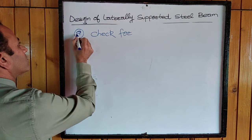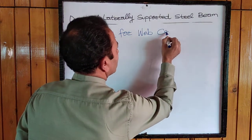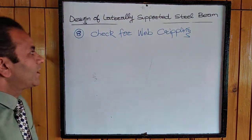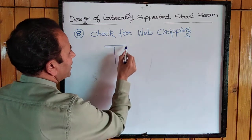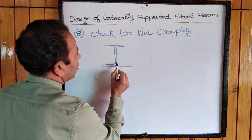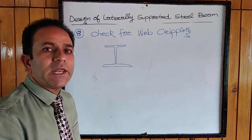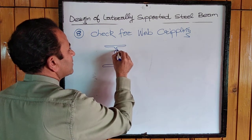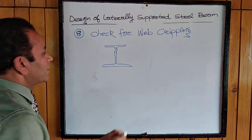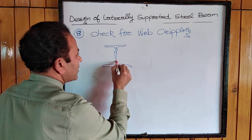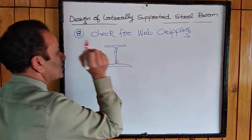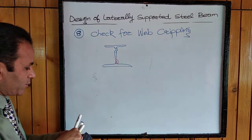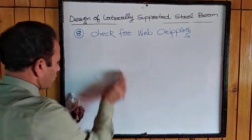After checking deflection, the next parameter is web crippling. The web has a tendency to cripple under the load or at the bearing area — it may bend under load or at the support where it is subjected to bearing stresses. We must make the structure safe against web crippling.